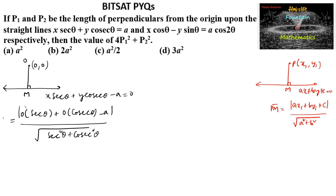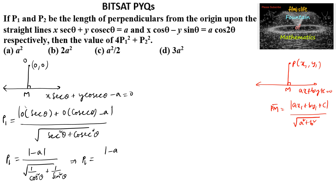So p1 = |−a| / √(1/cos²θ + 1/sin²θ). Simplifying, p1 = |−a| / √((sin²θ + cos²θ)/(cos²θ·sin²θ)) = |−a| · cosθ · sinθ.